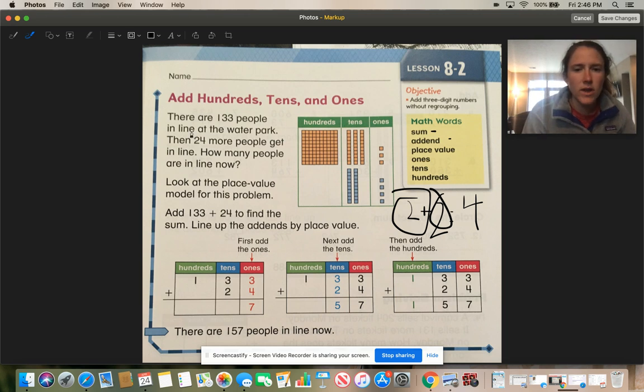Okay so let's go and read the directions on the page. It says there are 133 people in line at the water park. Then 24 more people get in line. How many people are in line now? Look at the place value model for this problem. Add 133 plus 24 to find the sum. Line up the addends by place value. So all the numbers in the ones place are worth 1, all the numbers in the tens place are worth 10, and all the numbers in the hundreds place are worth 100.